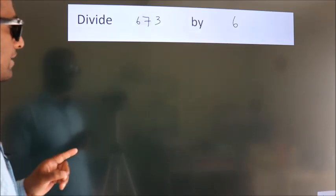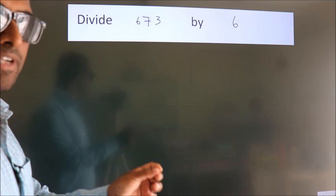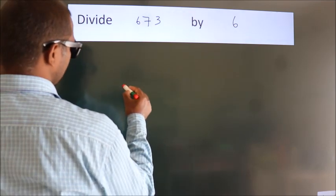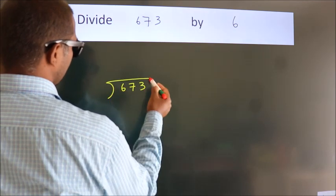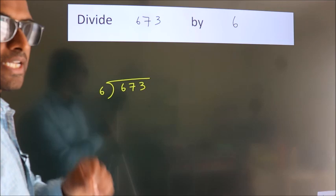Divide 673 by 6. To do this division, we should frame it in this way: 673 here, 6 here. This is step 1.